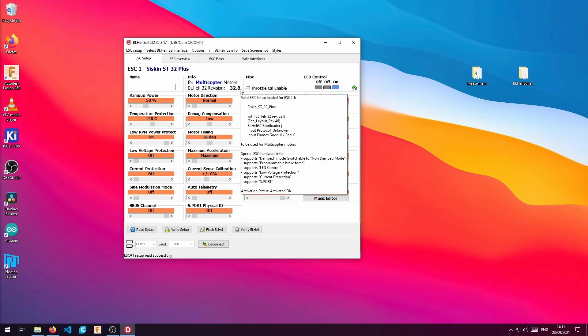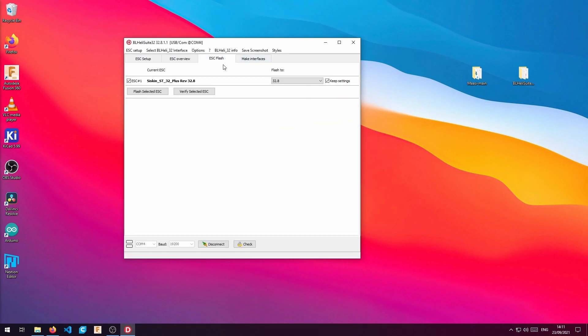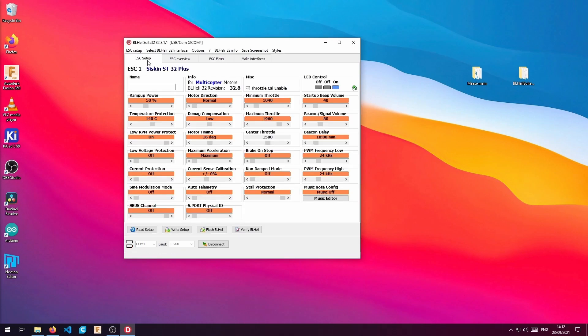It's important to install the 32.7 version. Newer versions of the firmware will cause instabilities. Once it's finished we come back to the ESC setup tab and we read again the parameters.